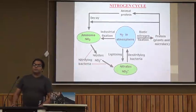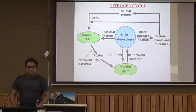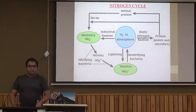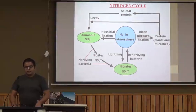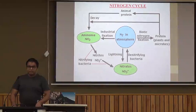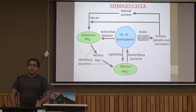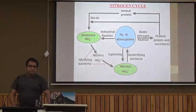This flowchart shows the nitrogen cycle. Nitrogen from the atmosphere changes into proteins present in plants and microbes, or is converted to ammonia by industries. This ammonia changes to nitrites, which are then changed to nitrates. The nitrates are absorbed by plants and animals. Nitrogen is also converted to nitrates by lightning. The proteins present in plant and animal bodies return back to the atmosphere after death using various pathways.